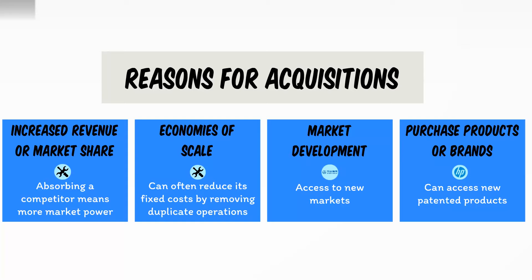Another reason is economies of scale — being able to remove duplicate operations to reduce costs. For example, a power tool manufacturer has its own accounting department and its own human resources department. When it purchases another power tool company, which also has its own HR and accounting departments, there's no need to run two simultaneous departments. You can merge them together, have just one HR department and one accounting department that needs less cost and less staff than the two when running separately.